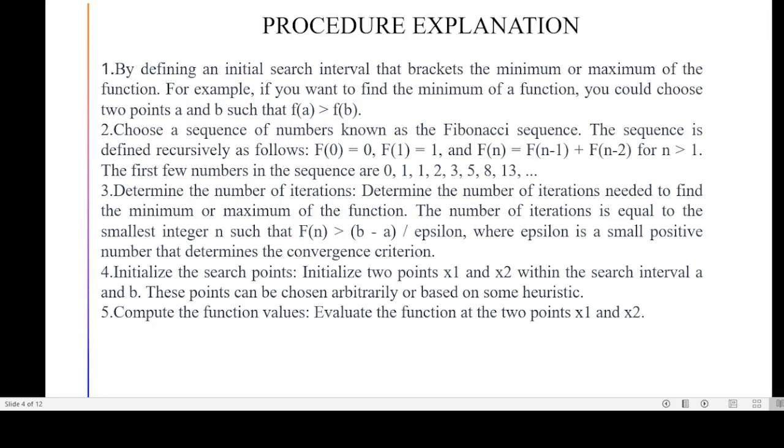Here we will talk about its procedure. First we define initial search intervals that brackets minimum or maximum of a function. If we take an example to find the minimum of a function, you take two initial intervals such that f(a) is less than f(b). Then we check the Fibonacci sequence. It is sum of two preceding numbers. It is a sequence defined recursively as f(0) = 0, f(1) = 1. If n is greater than 1 then it is f(n) = f(n-1) + f(n-2).